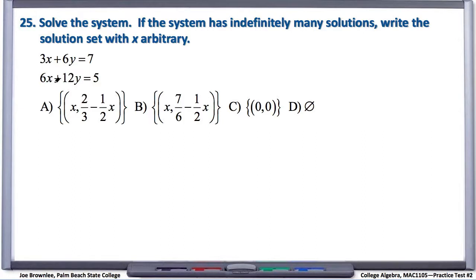I think with 24 we eliminated the x variable, so let's go ahead and in 25 eliminate the y variable. Again, we know if we're going to eliminate one of the variables, we need the coefficients to be additive inverses.